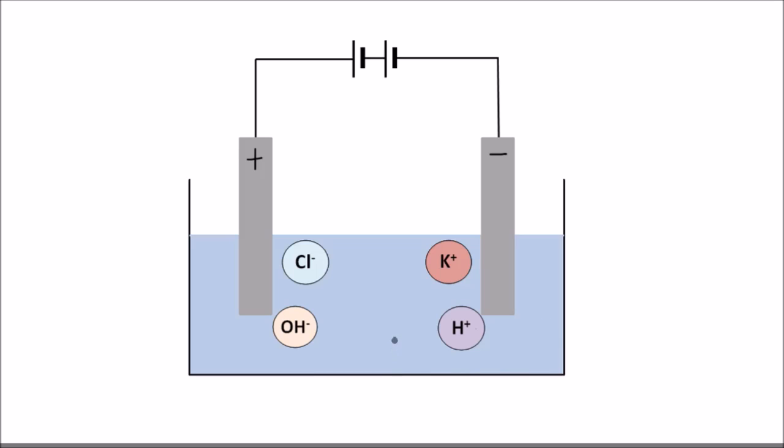In this case, we have a compound of potassium, potassium chloride, dissolved in this water. So there are two different ions which could be produced at an electrode.